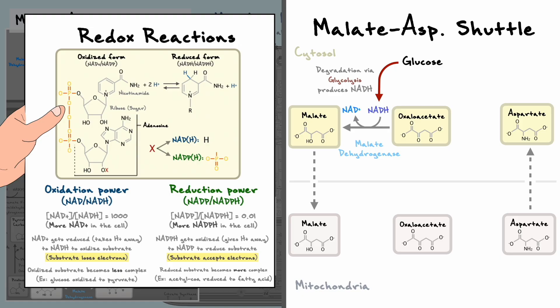Very simply, a substrate that gets reduced accepts electrons and a substrate that gets oxidized loses electrons. Since matter is never created or destroyed, an oxidation is always paired to a reduction.